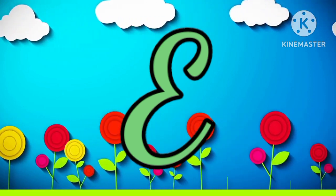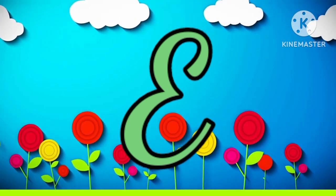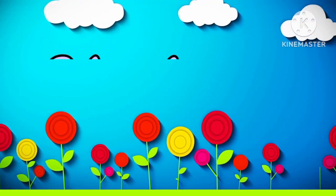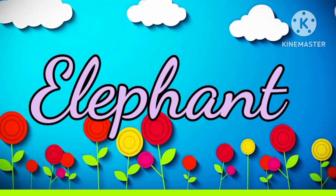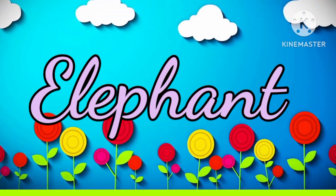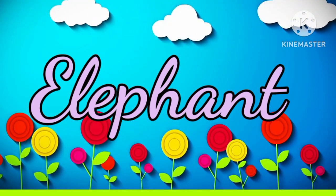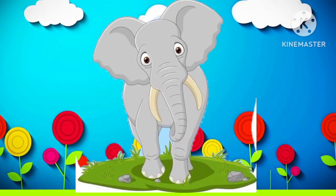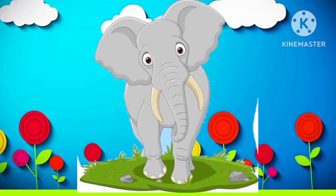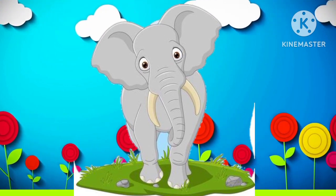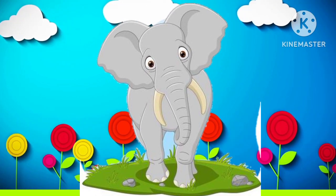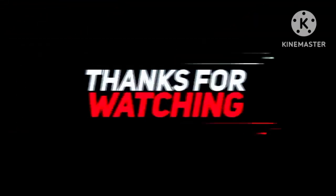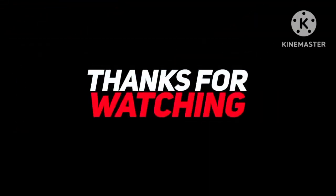M is for Mat, M-M-Mat. N is for Net, N-N-Net. O is for Orange, O-O-Orange. P is for Pet, P-P-Pet.